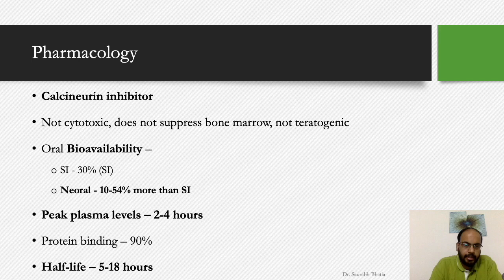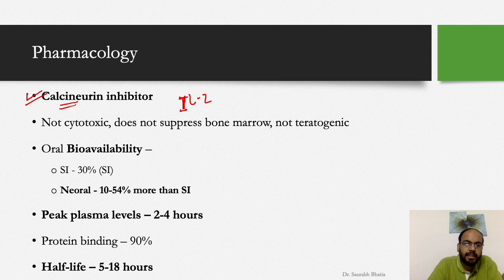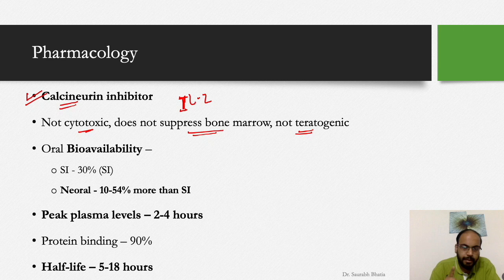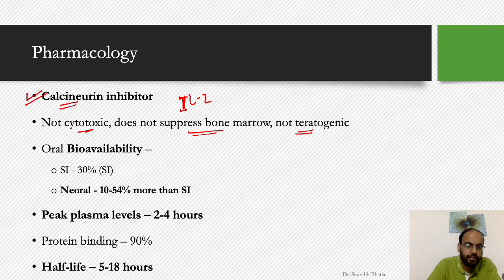Cyclosporine is a calcineurin inhibitor. Calcineurin is responsible for translation of various interleukins, predominantly the interleukin-2 pathway. What cyclosporine does is inhibit calcineurin. Importantly, cyclosporine is not cytotoxic, does not suppress the bone marrow, and is not teratogenic — unlike azathioprine and methotrexate, which were cytotoxic, suppressed bone marrow, and were teratogenic.